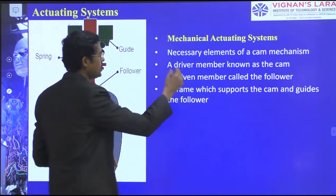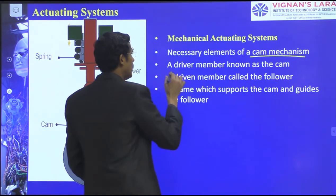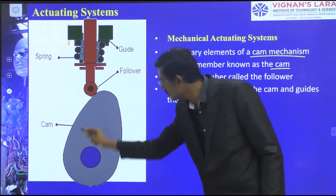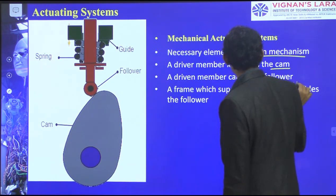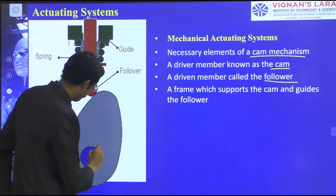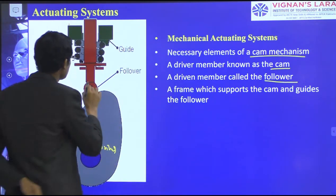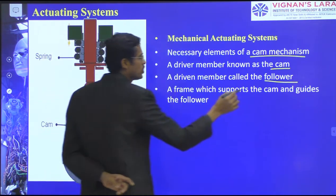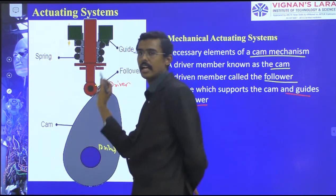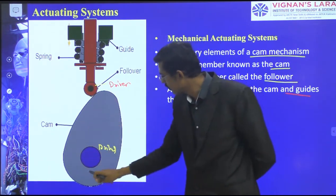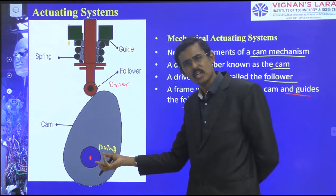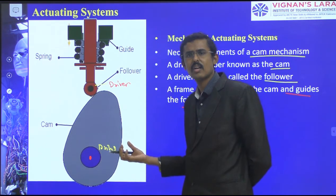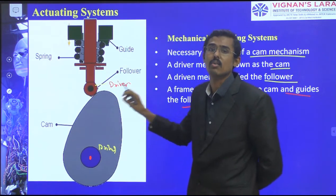The necessary elements of a CAM mechanism are: a driving member known as the CAM, a driven member called the follower, and a frame which supports the CAM and guides the follower. The CAM profile is connected somewhere to a motor or receives input from a crankshaft or rotating mechanism. We then use this to control up-and-down engine controls. When the profile rotates, it pushes the follower; a spring returns it back to the nil position. Likewise, dwelling operations can be done.